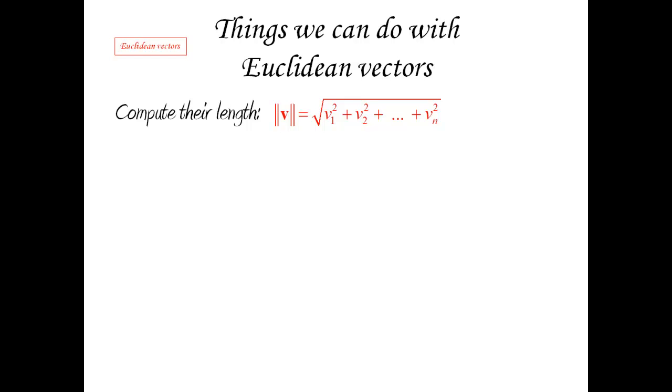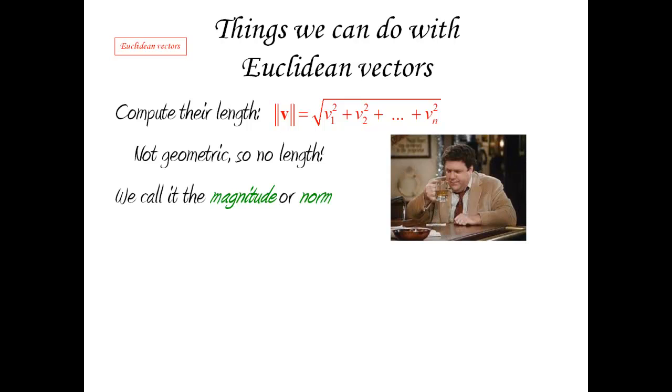But wait a minute. These are not geometric vectors. These are things which exist algebraically. We can try and imagine some kind of four-dimensional space in which we can draw these things, but this is not really a length. So, in order to bring this issue to our attention, just remember that we're dealing with algebraic objects. We're going to change the name. We're not going to talk about the length of a Euclidean vector, but instead about the magnitude or the norm.